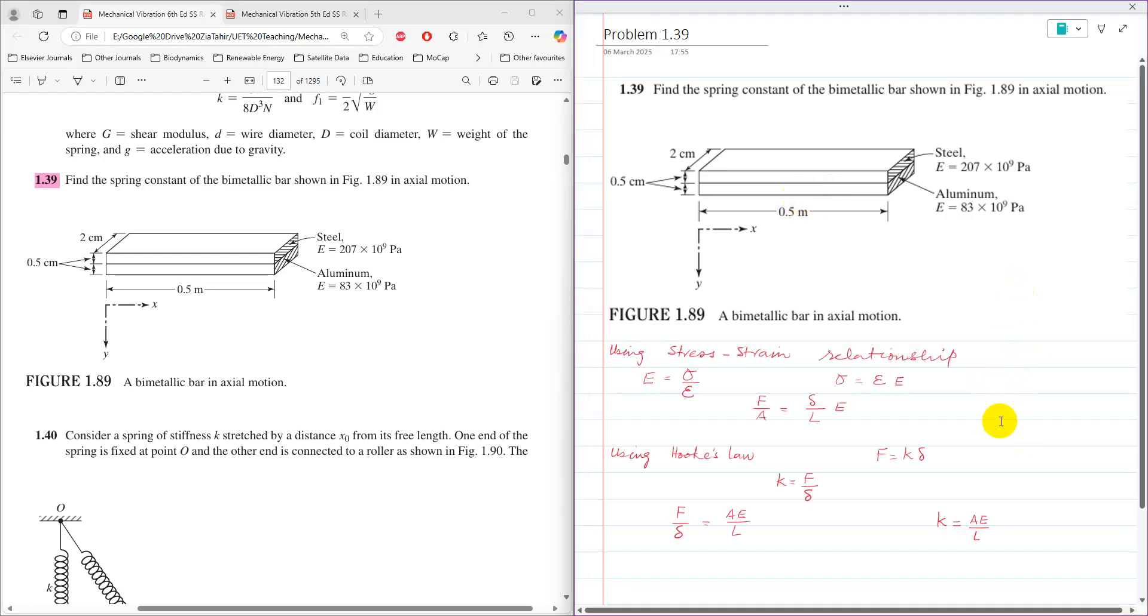The equivalent spring stiffness of each bar can be calculated using the stress-strain relationship and Hooke's law. Young's modulus E equals stress over strain, so stress equals strain times E. Since stress is force per cross-sectional area and strain is deflection over length, we have stress equals delta over L times E. Hooke's law states F equals K times delta.